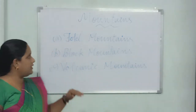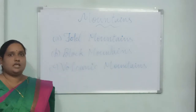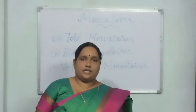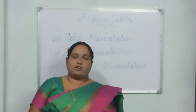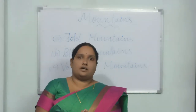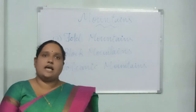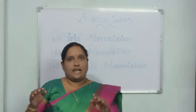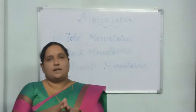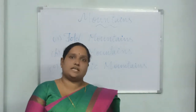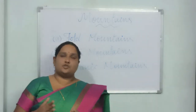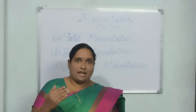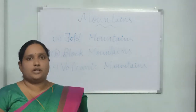We will start with the first one, that is fold mountain. Like the name indicates, it happens by folding of the earth's crust. Usually this type of landform can be seen near or on the side of continents, and they happen due to plate tectonic theories — when two landmasses collide, fold mountains are formed. Our Himalayan mountains are an example of fold mountain.